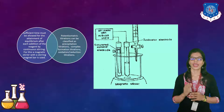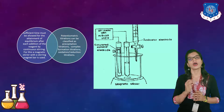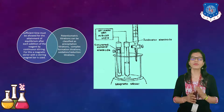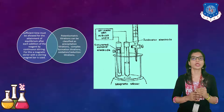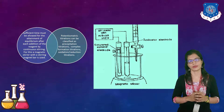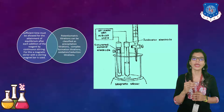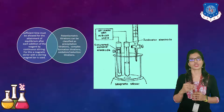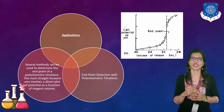Potentiometric titrations can be classified as precipitation titrations, complex formation titrations, oxidation titrations, reduction titrations, or oxidation-reduction titrations. For all these kinds of titrations, to get better results than normal titrations, we use a method known as the potentiometric method. The method is known as potentiometric, the titration is known as potentiometric titration, and the instrument used is known as a potentiometer.